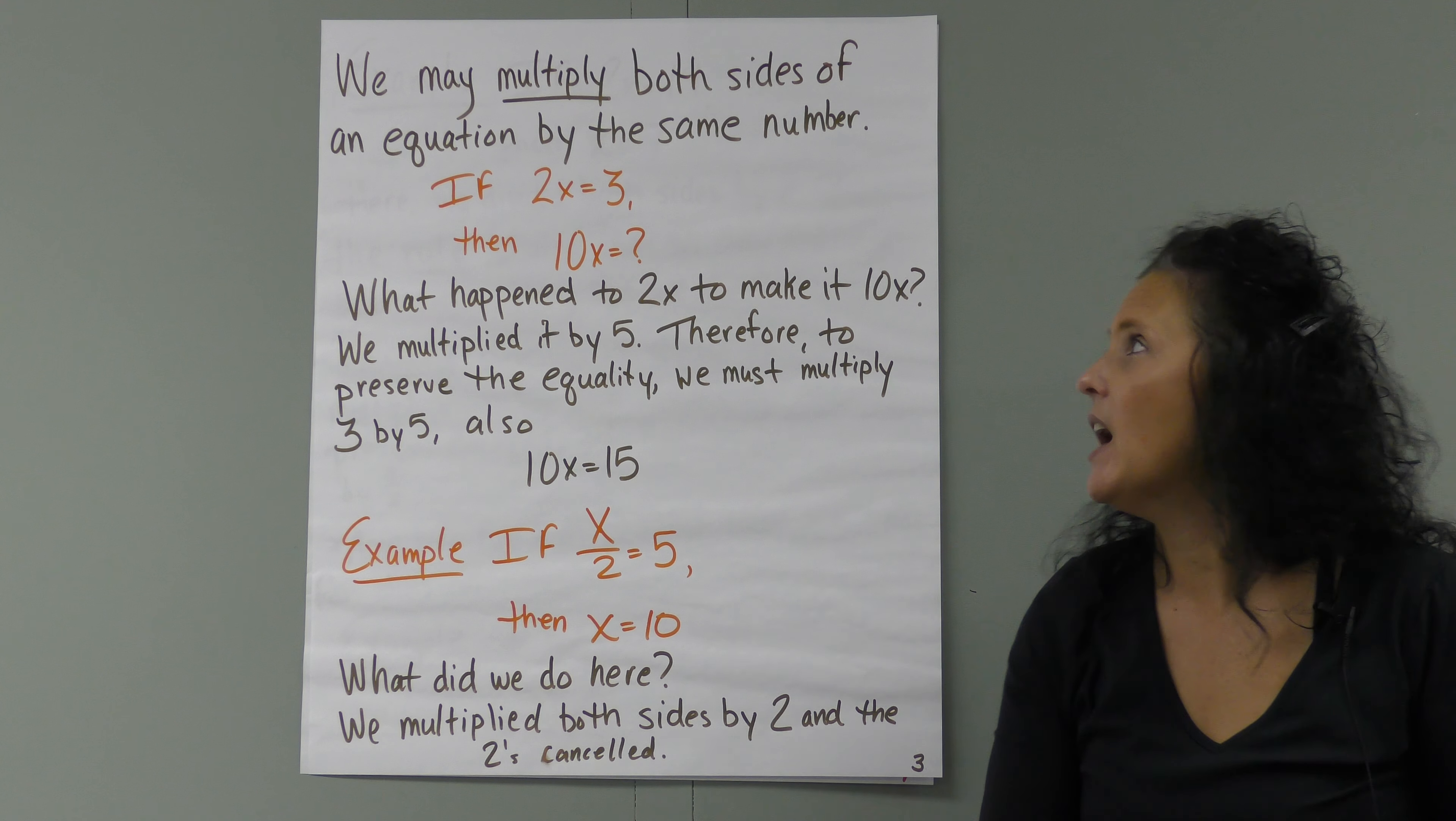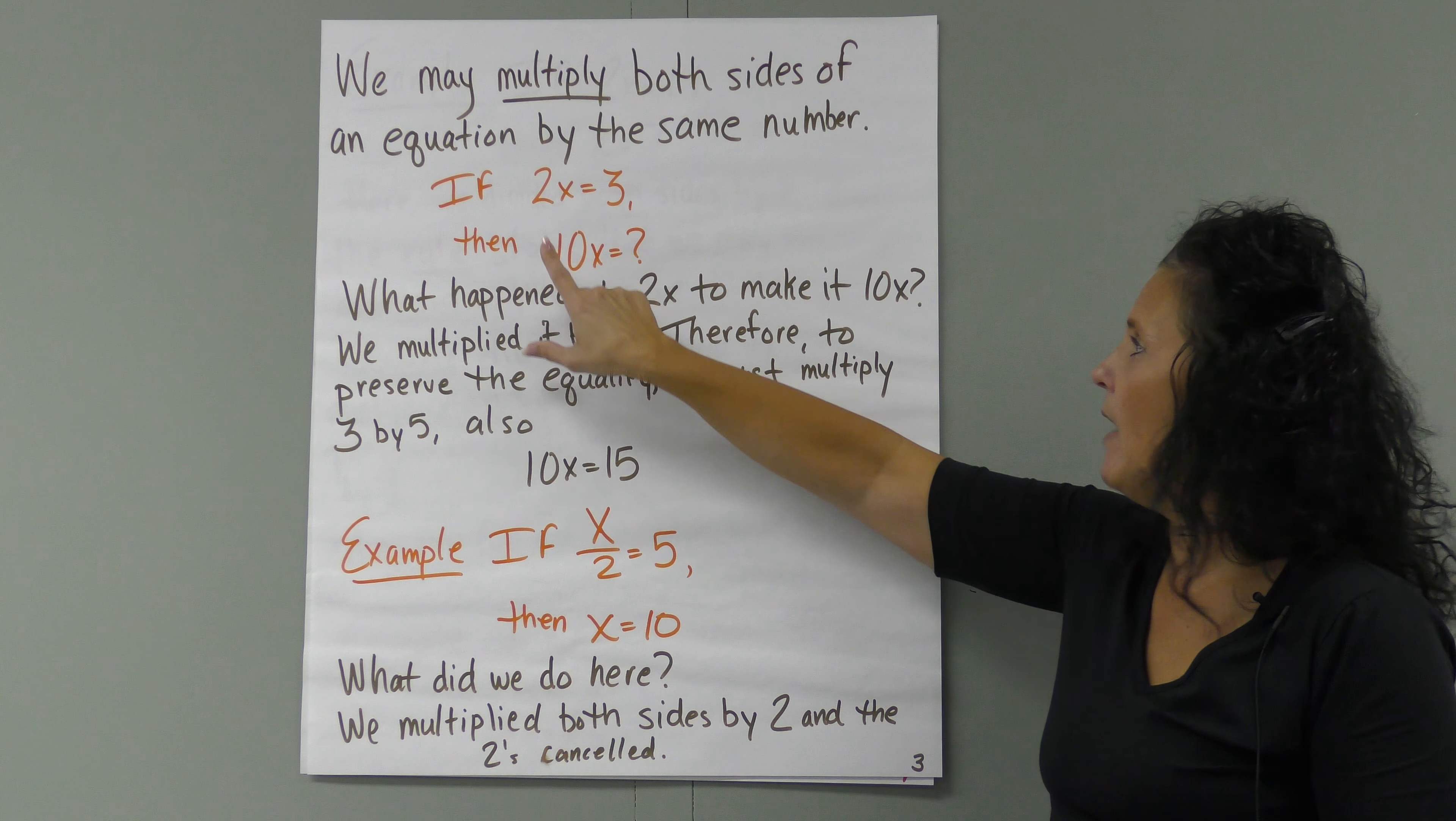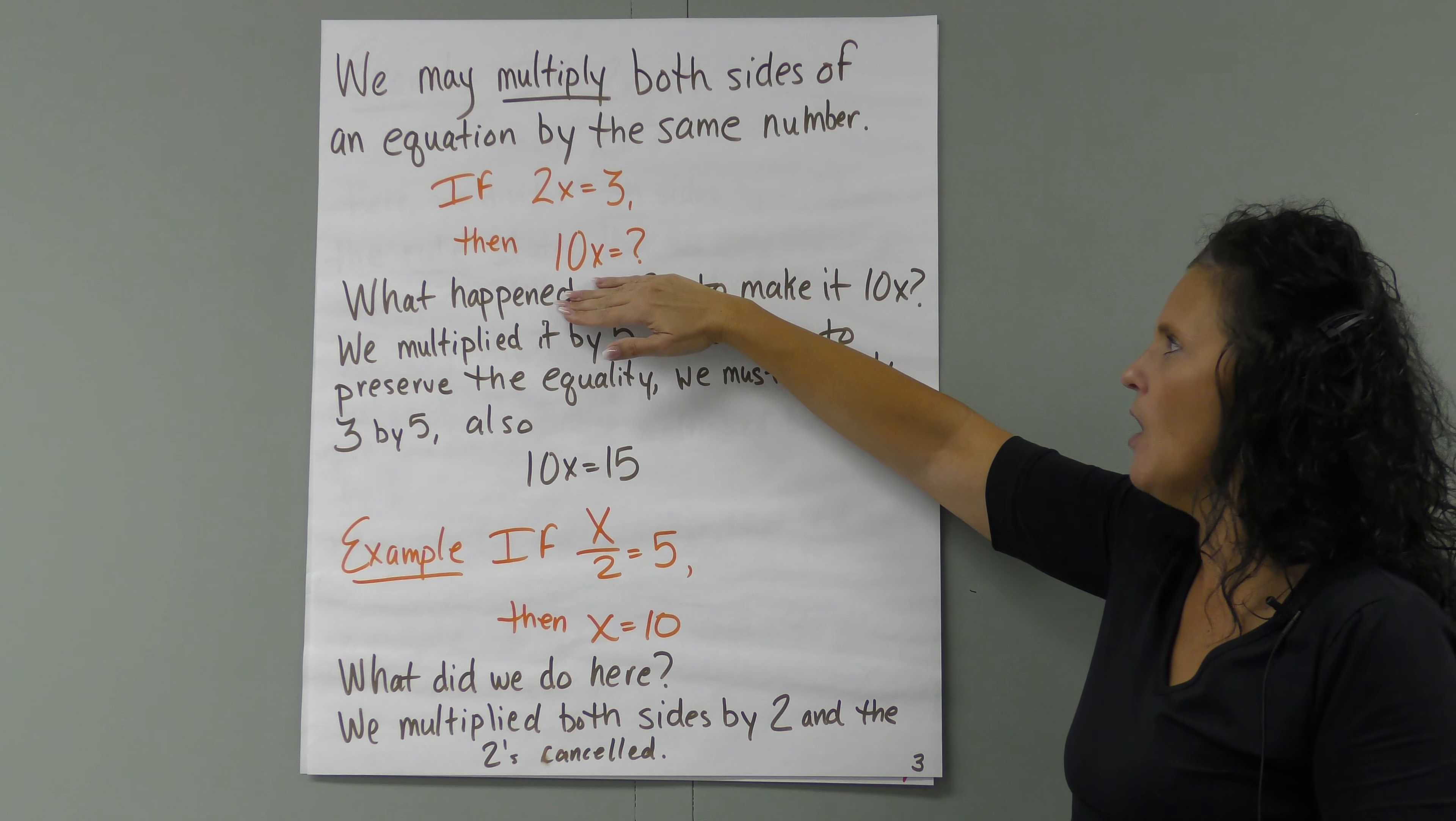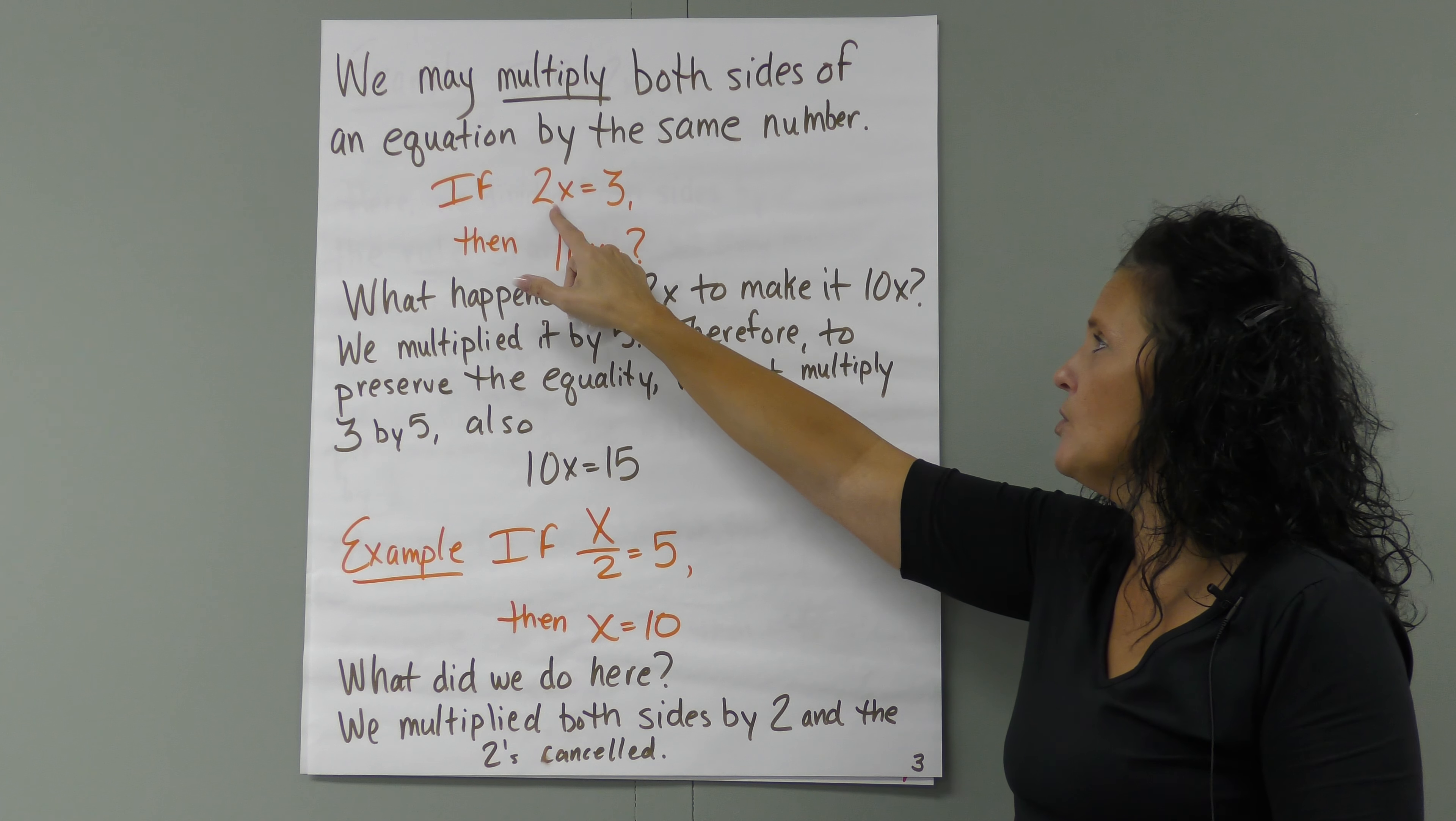We can multiply both sides of an equation by the same number. In this instance, if we have 2X equals 3, in order to get X by itself here, what do we have to do? If 2 times X equals 3, then 10X equals—they want us to solve for 10X, not this equation. So we have to figure out what 10X is equal to. What happened to the 2X to make it 10X here? That's the step we have to figure out.